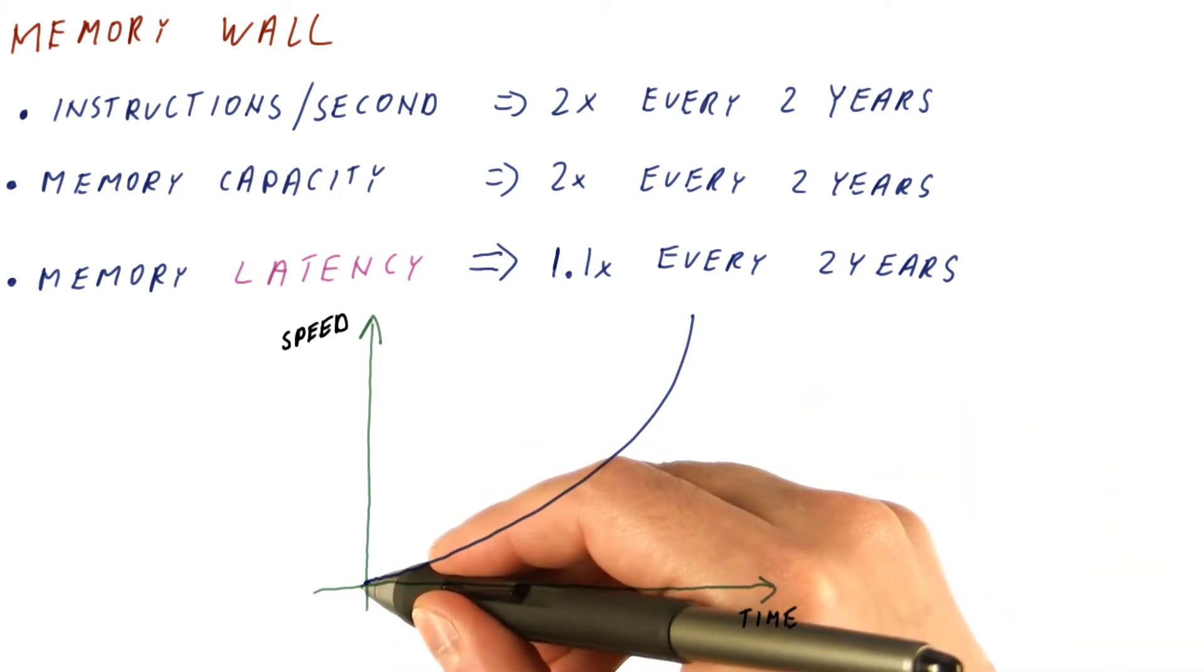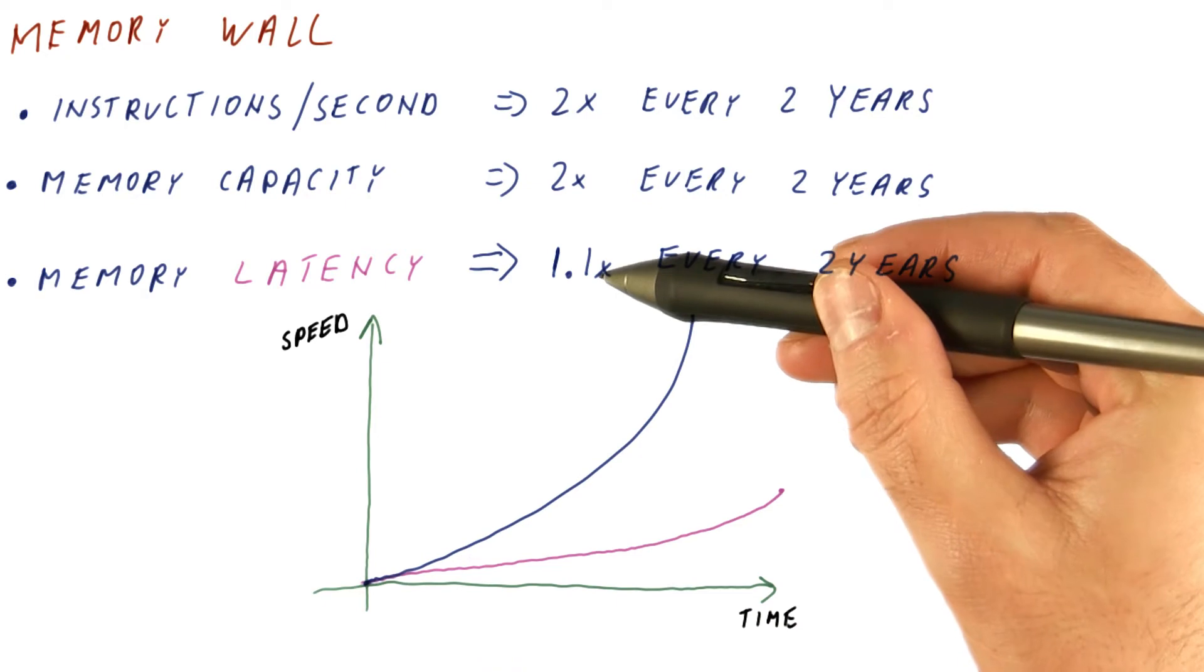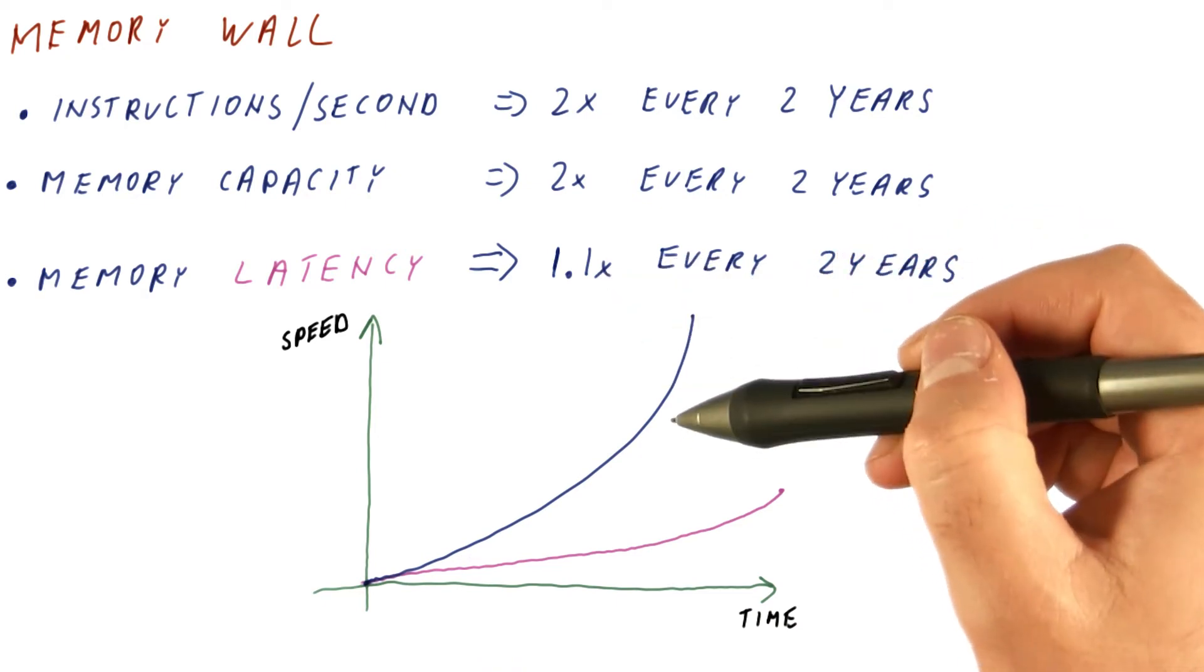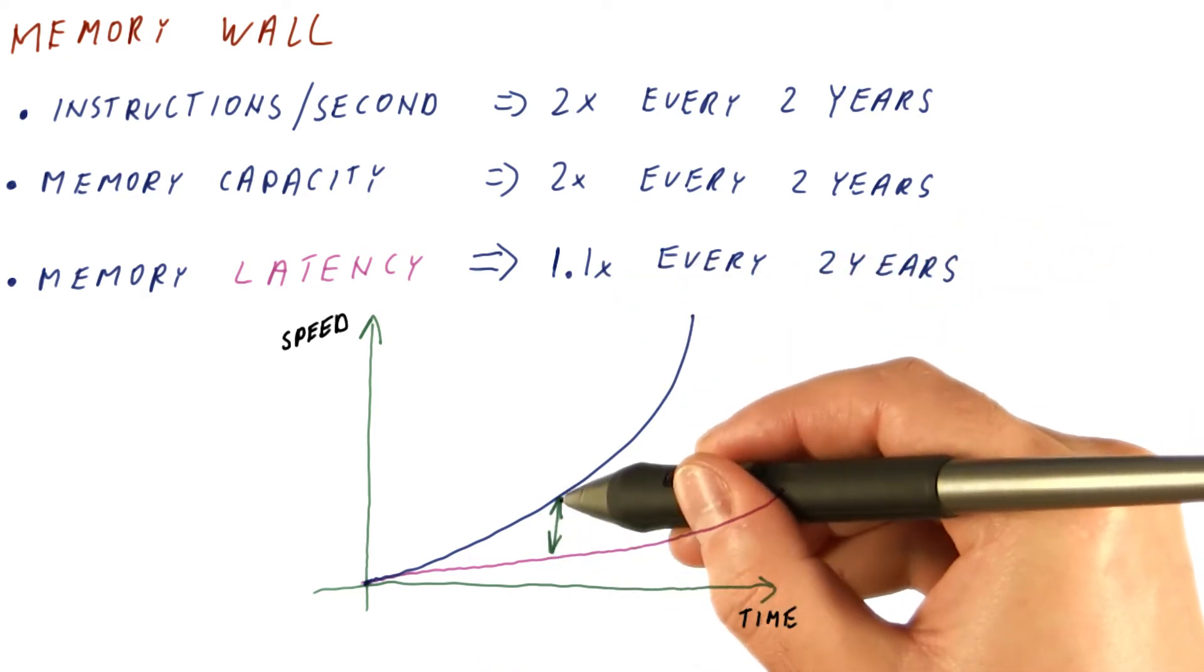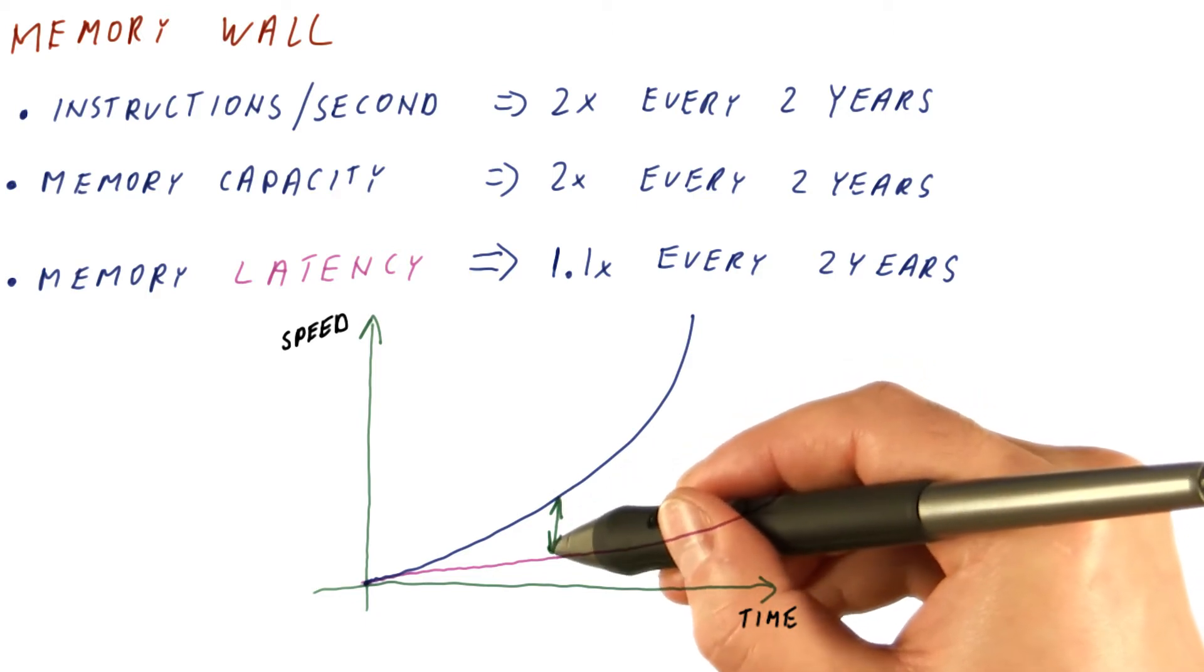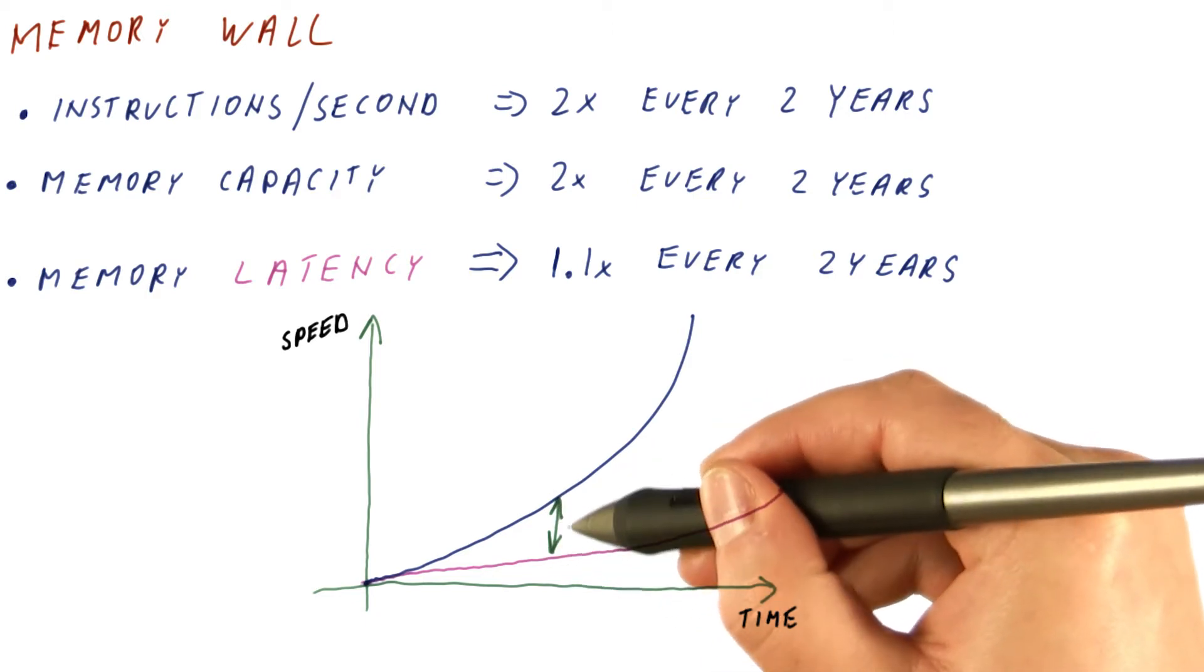And we get another exponential curve, but that grows a lot slower for memories. This here is the gap between processor performance and memory performance at some time.